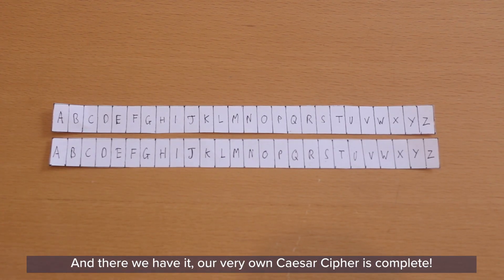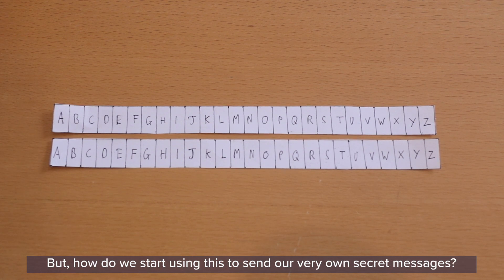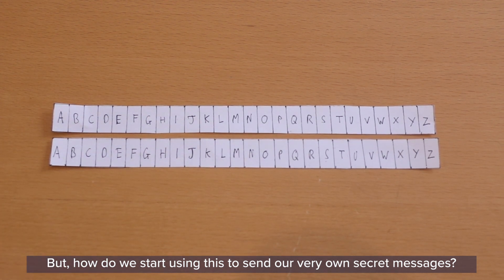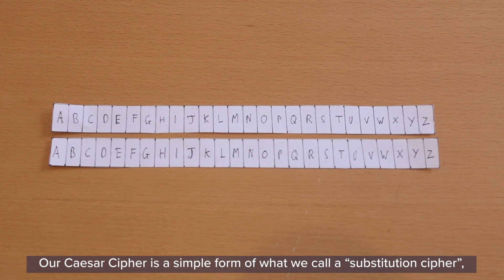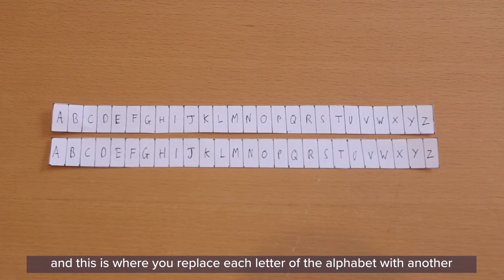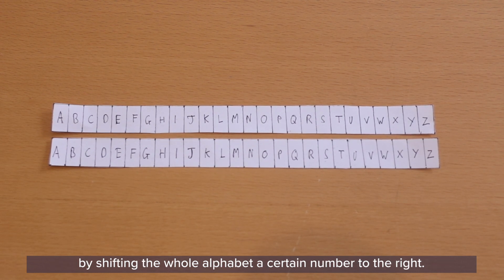And there we have it. Our very own Caesar cipher is complete. But how do we start using this to send our very own secret messages? Well, our Caesar cipher is a simple form of what we call a substitution cipher. This is where you replace each letter of the alphabet with another by shifting the whole alphabet a certain number to the right.